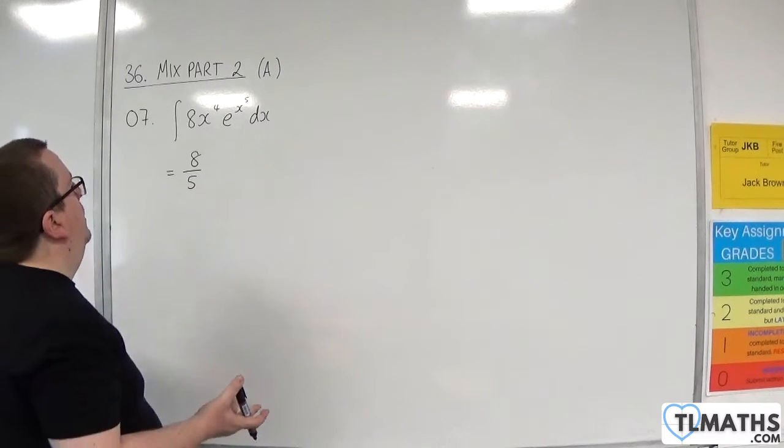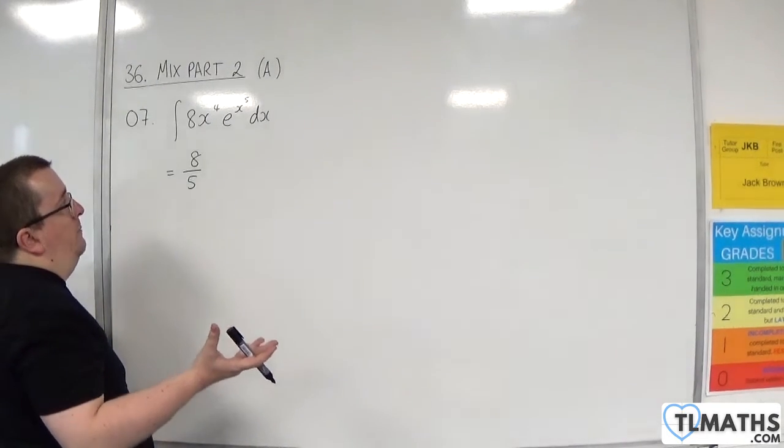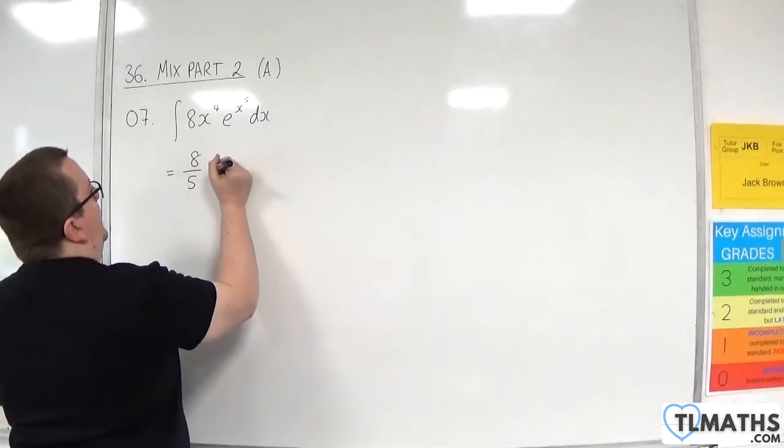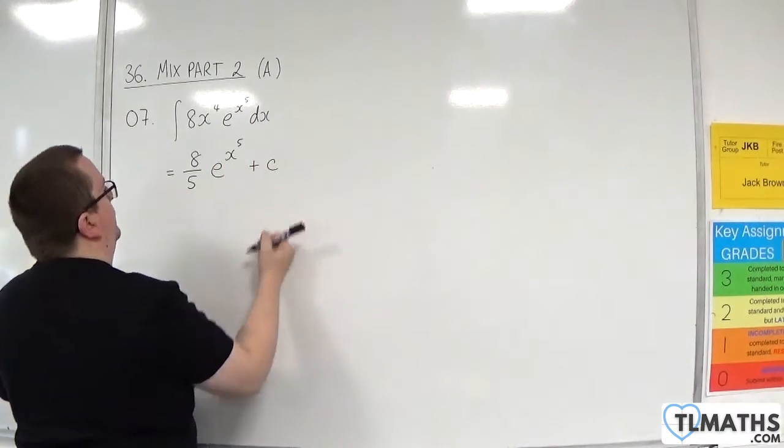OK, now e differentiates and integrates, sorry, to itself. And so this will be e to the x to the 5 plus the constant c.